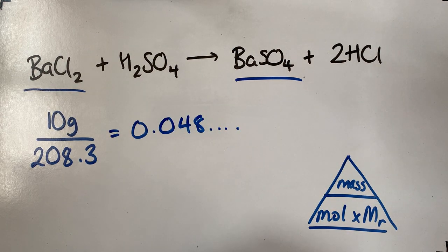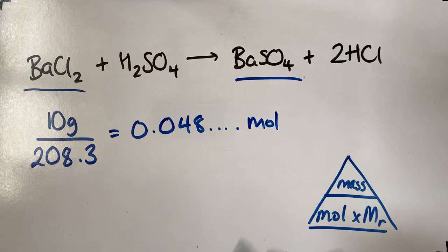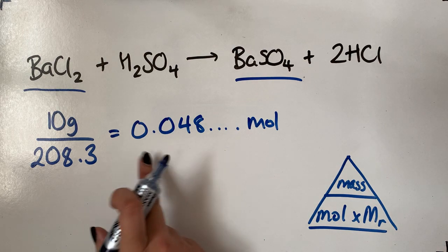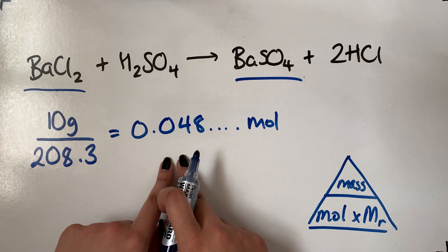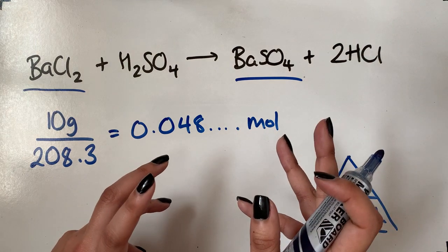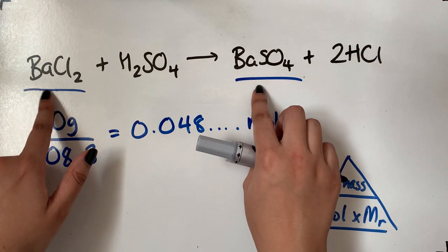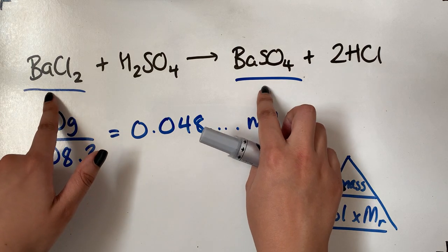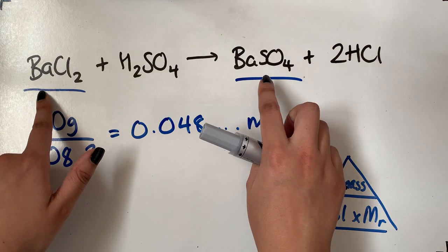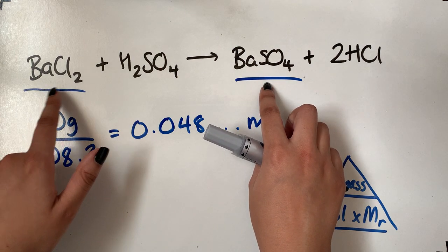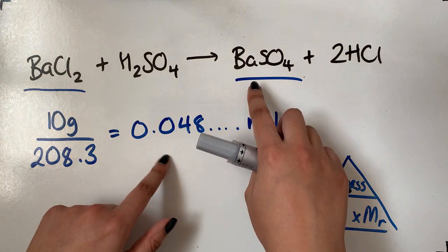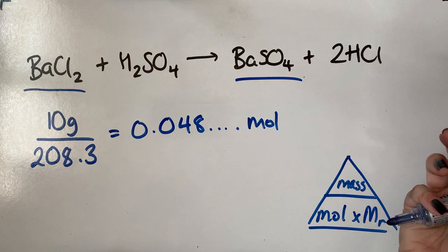There are other digits afterwards — I'm obviously not going to write them all out, but I will keep that value in my calculator, as should you. So that's our moles of barium chloride. We now need to work out the moles of barium sulphate. This is why you have to write out the balanced equation. As you can see, there are no numbers in front of both of them, so it's a one-to-one ratio. One mole of barium chloride will form one mole of barium sulphate, and therefore 0.048 moles of barium chloride will form 0.048 moles of barium sulphate.